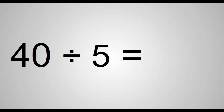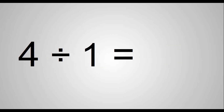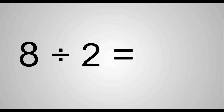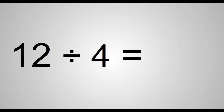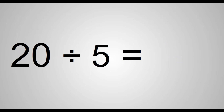40 divided by 5 equals 8. 4 divided by 1 equals 4. 8 divided by 2 equals 4. 12 divided by 4 equals 3. 20 divided by 5 equals 4.